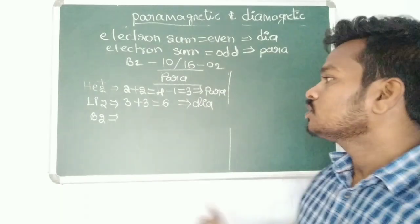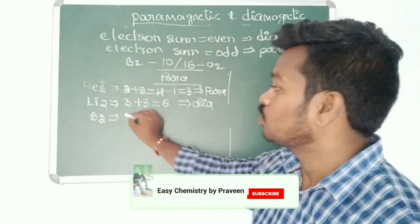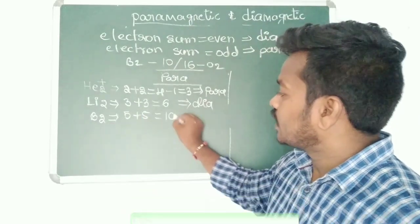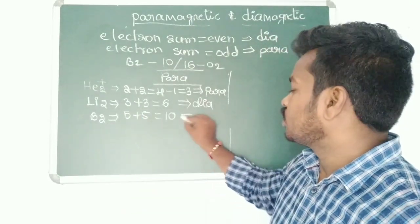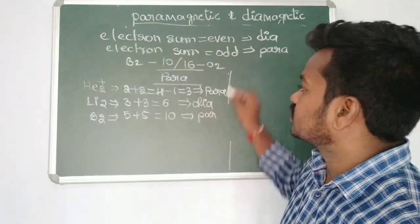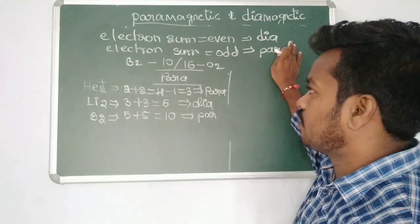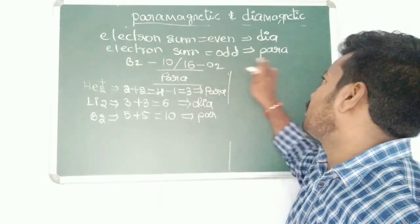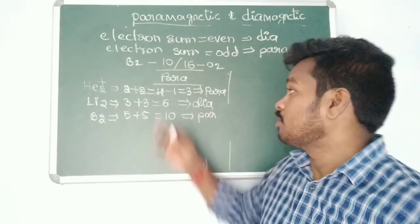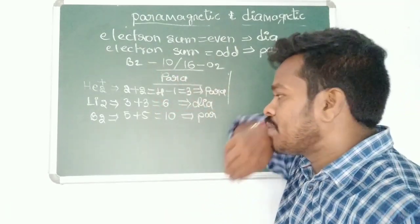Next, B₂: boron has atomic number 5, so 5 + 5 = 10 electrons. Even though it is an even number, because it falls under the exception of 10 electrons, it is paramagnetic in nature. Remember: electron sum even = diamagnetic; electron sum odd = paramagnetic; but 10 and 16 electrons are always paramagnetic.